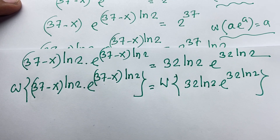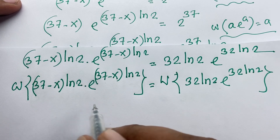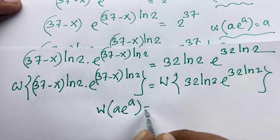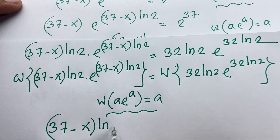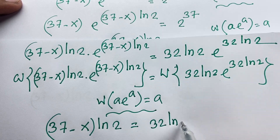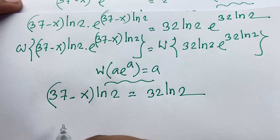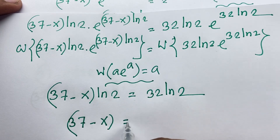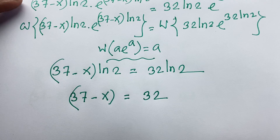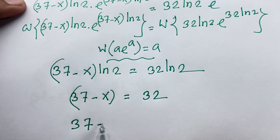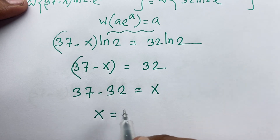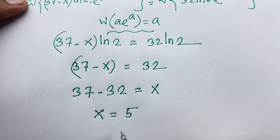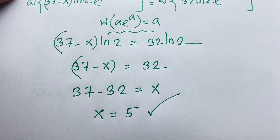Dividing both sides by ln 2, we get 37 minus x equals 32. Moving terms, x equals 37 minus 32, which equals 5. This is our final answer for this math Olympiad question. Thank you all. If you enjoyed this video, please subscribe to my channel for other interesting videos. Goodbye, take care.